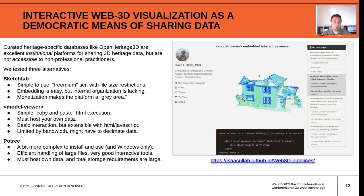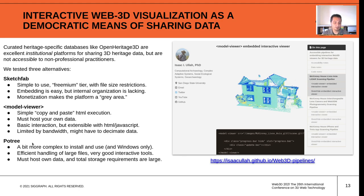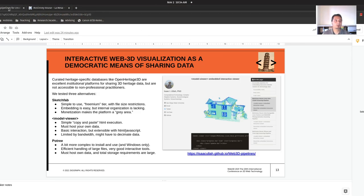Now, creating the scans is the first part. The second part is figuring out how local institutions without lots of budget could utilize the 3D scan data, particularly in a web-based 3D internet format. I'm going to show you the results using probably the most accessible pipeline, which is to upload to Sketchfab and use their embed code. A second option uses something called Model Viewer — a simple copy-and-paste JavaScript code that you can put into your website if you host your own data. We'll also show results using Poetry, which is open source, though we haven't had a lot of success ourselves with it.